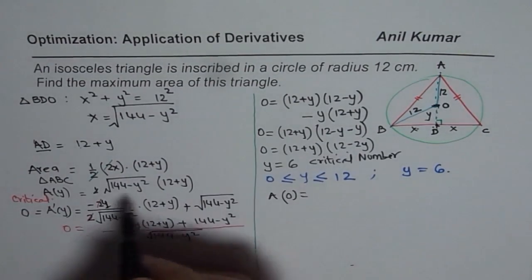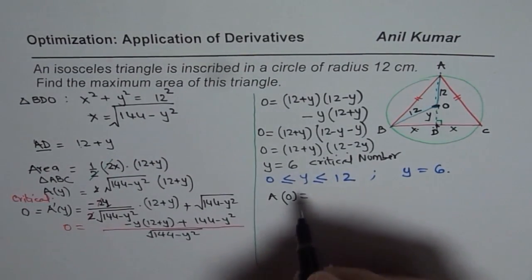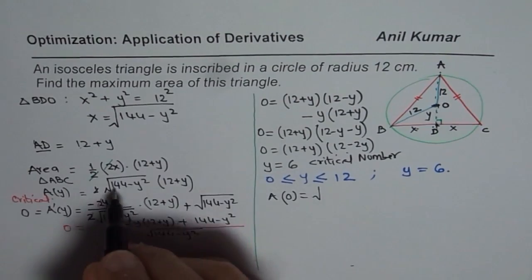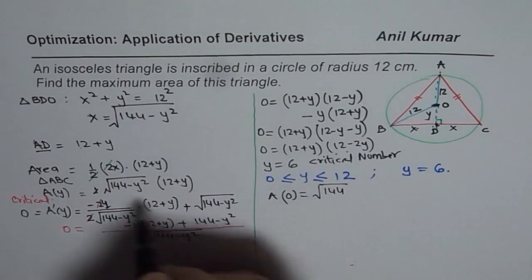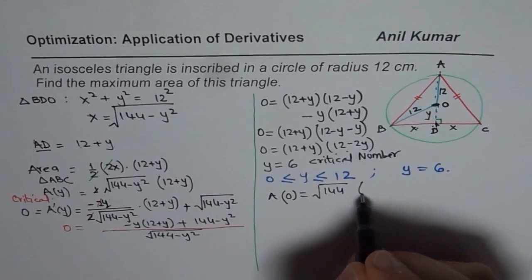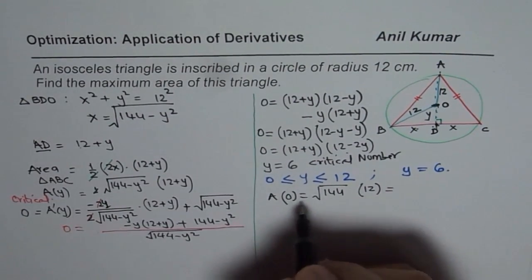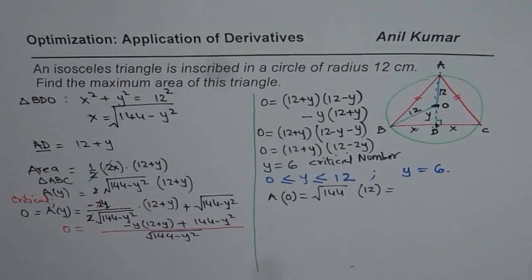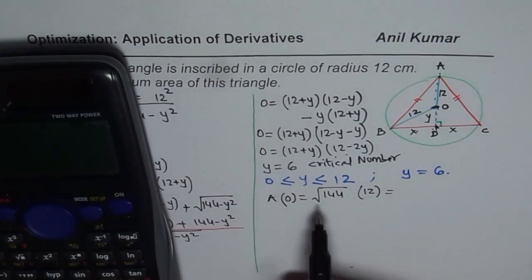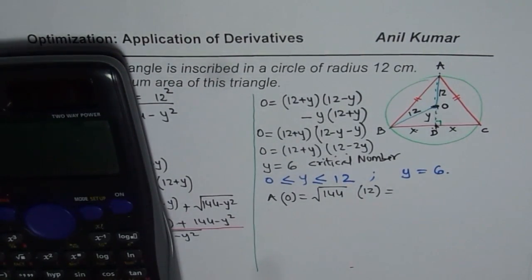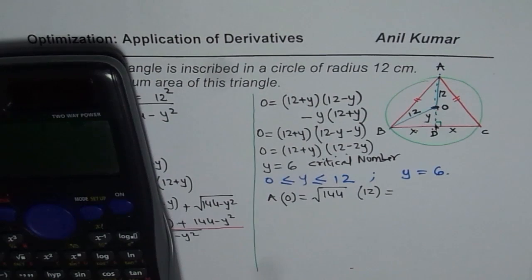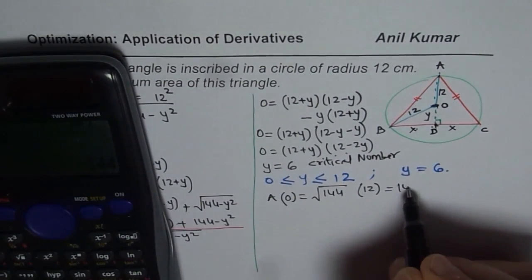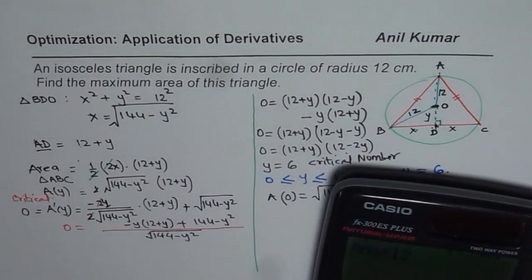For Y = 0: area equals square root of 144 times 12. Square root of 144 is 12, so 12 times 12 equals 144. So area at Y = 0 is 144.